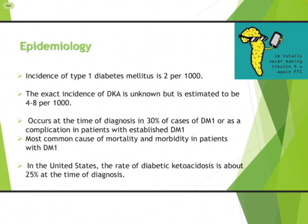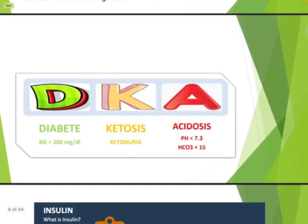DKA stands for diabetic ketoacidosis. The criteria to diagnose it: D — diabetes, with a random blood sugar of 200 or more; K — ketosis or ketonemia, the presence of ketone bodies in blood being excreted in urine; and A — acidosis, where arterial or venous blood gas shows a pH of less than 7.3 and a bicarbonate level of less than 15.